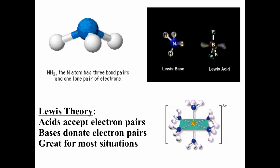Here we have ammonia plus BF3. Ammonia is going to be the Lewis base — it donates its electron pair. BF3 is going to accept that electron pair, so it's a Lewis acid. We cannot use Brønsted theory here because there is no transfer of hydronium ions, but we do have a donation and acceptance of an electron pair. Lewis acid-base theory is more general than Brønsted theory because it applies to systems that do not involve protons.